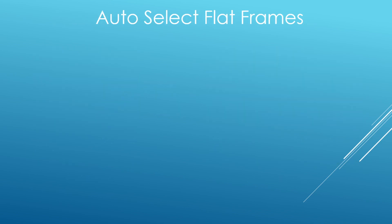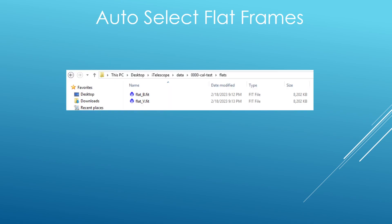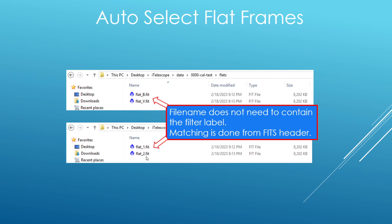The last thing I wanted to talk about is the automatic selection of flat frames. The matching criteria is based on: number one, the dimensions — the light frame must have the same width and height as the flat frame. But number two, it also must match on filter. The filter value could be luminance, L, clear filter, B filter, V filter, and so forth. As long as the light frame has the same filter as the flat frame it will meet that criteria. You simply point it to a directory containing all of your flat frames, and the file names do not even have to encode the filter — because the matching is done from the header of the image.